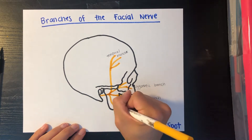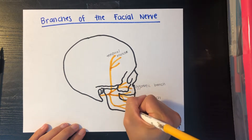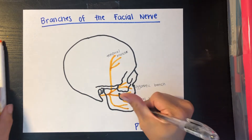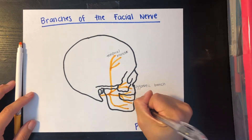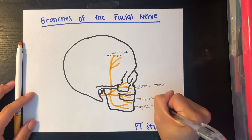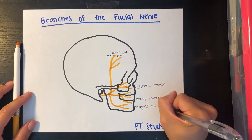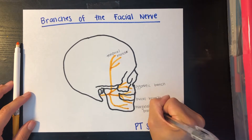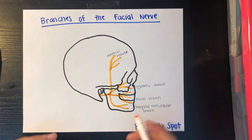Moving on, the nerve to the mandible — you have your marginal mandibular branch. This nerve innervates your risorius and your lower lip.